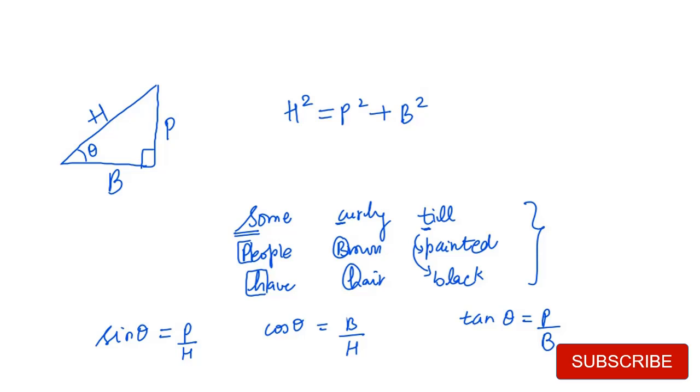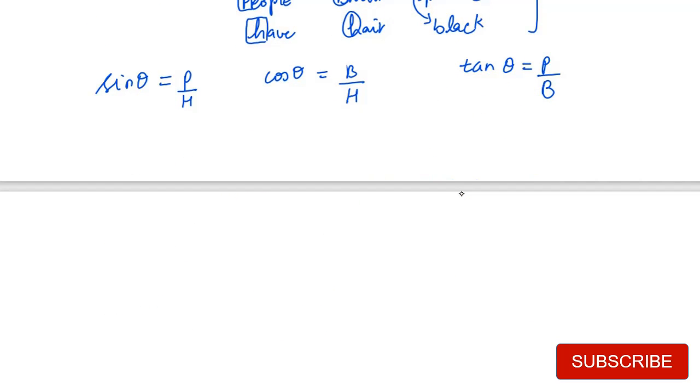Now what is the opposite of sin theta? It is cosec theta, and the formula is H over P. If cos theta is B over H, then sec theta will be H over B. Tan theta's opposite is cot theta, which equals B over P. What have we done? We have taken the reciprocal of each one of them.